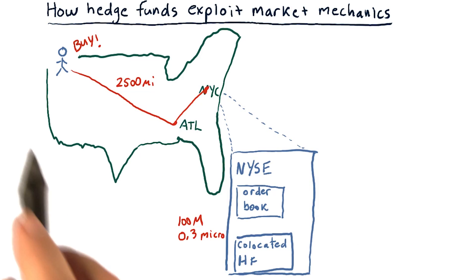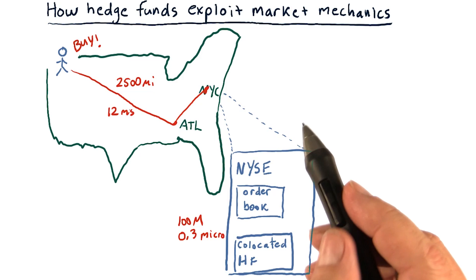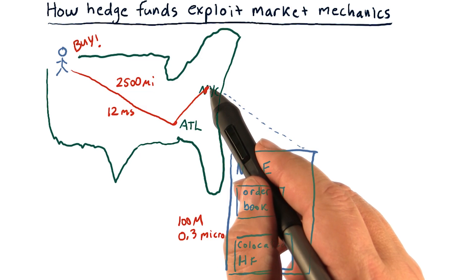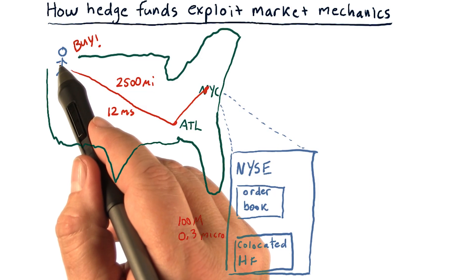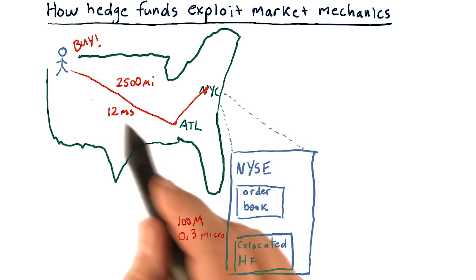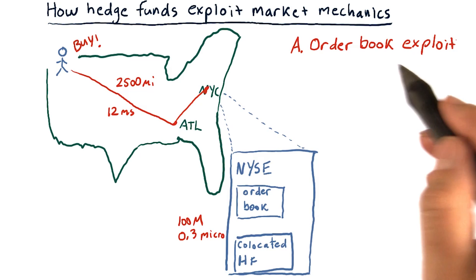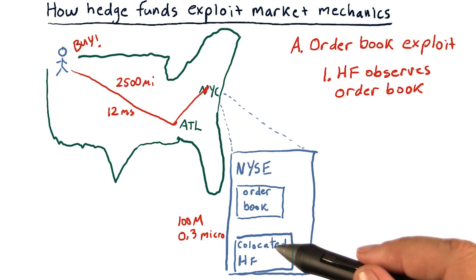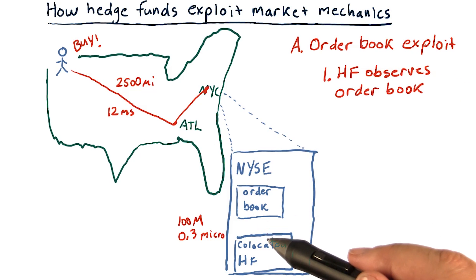You, on the other hand, are located at least 2,500 miles away. That means when the order book changes, it takes at least 12 milliseconds for that information to get to you, and 12 milliseconds for your order to reach the exchange. Here's how what I call the order book exploit works: the hedge fund is continually observing the order book, and it takes only 0.3 microseconds for it to do that.